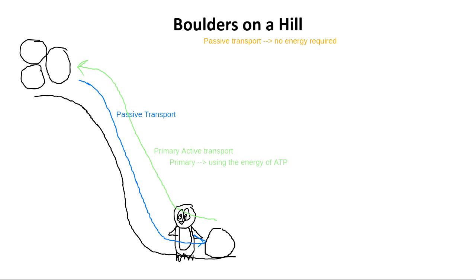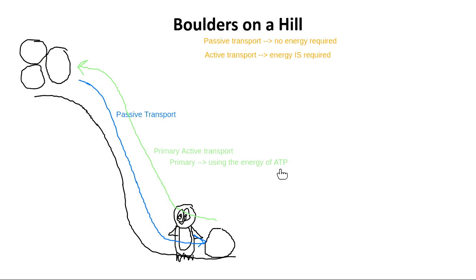Any time I talk about active transport, energy is required. Getting that rock from down where there's a low concentration back up where there's a higher concentration is always going to take energy. The first kind of energy that could be used is ATP, or the chemical energy that a cell has. Nicole asked if ATP comes from mitochondria — yes, that's the job of mitochondria: to make ATP. That's why they're called the powerhouse of the cell.